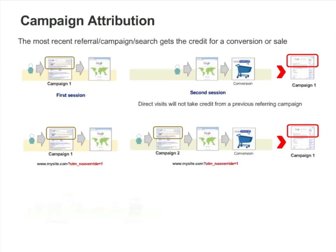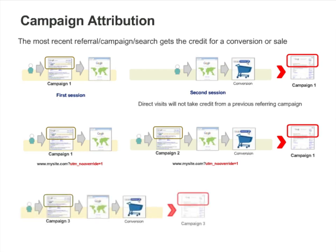If a visitor returns via a link without the UTMNoOverride, as in the third example, that campaign will get credit for the sale, since it overwrites all previous referring campaigns.